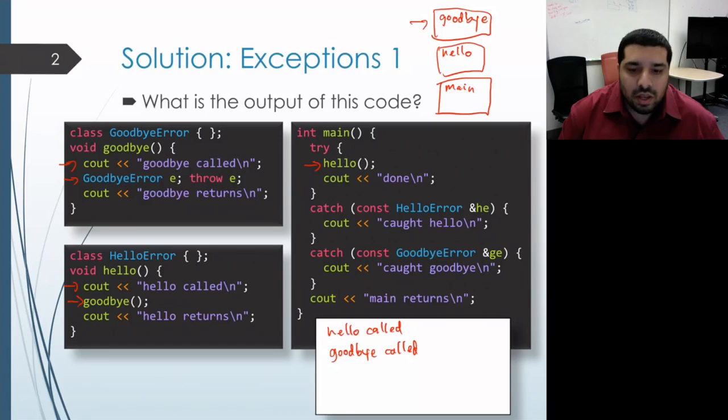After that, it's going to look at the next scope and see, are we within a try-block over there? In hello, we're also not in a try-block. Then the program will proceed to the next scope and check to see if we're within a try-block in main.